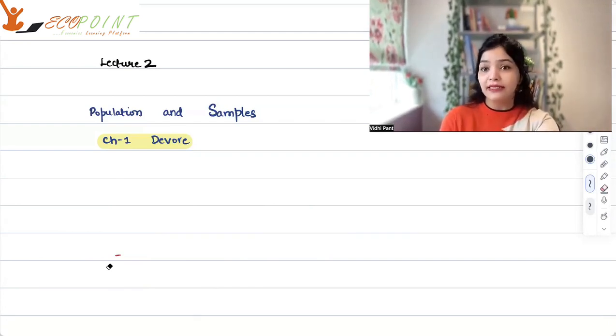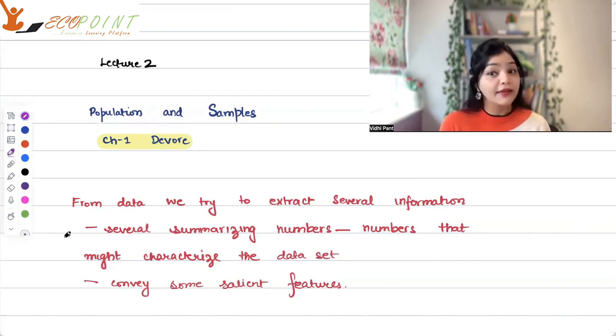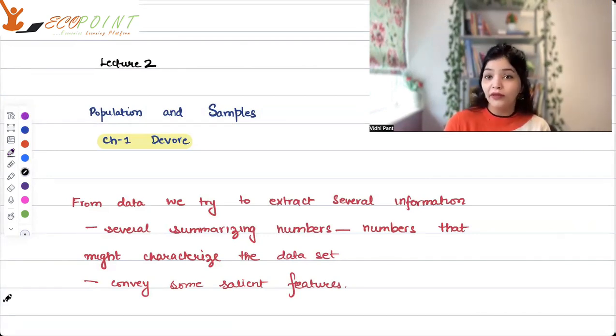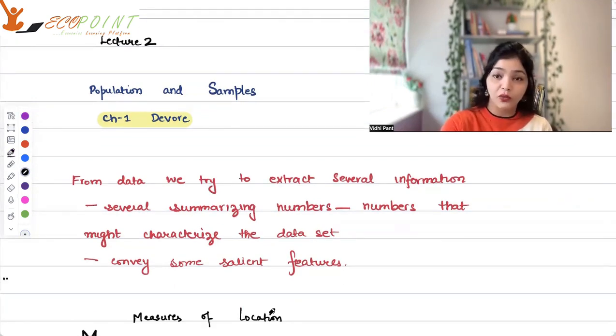Basically, from this data that we collect, we can figure out some important things. We extract several information. We can find several summarizing numbers, numbers that can characterize your data, convey some salient features. One very important type of measure are the measures of location. One such measure of location, which is very important from population or sample point of view, is called mean.